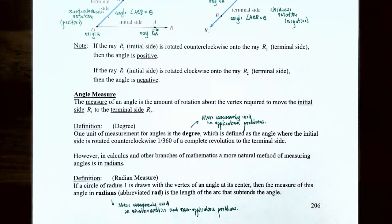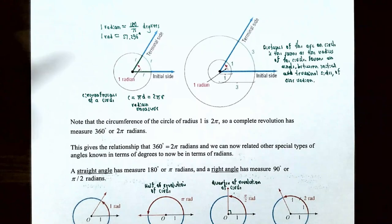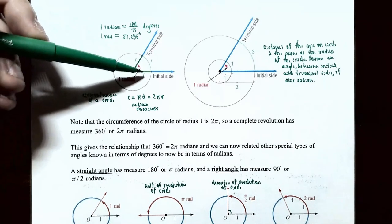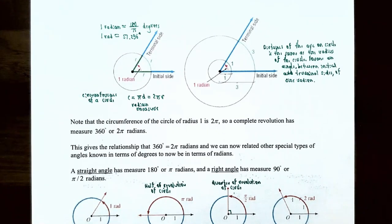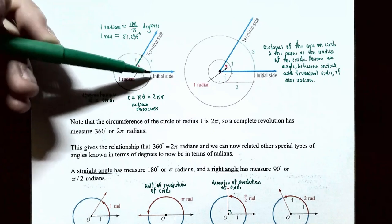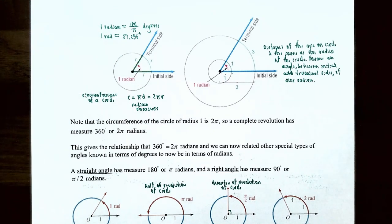The more commonly used measurement for angles is what's called radians, which is more commonly used in calculus and other branches of mathematics. If a circle of radius 1 is drawn with a vertex of an angle at its center, then the measure of this angle in radians is the length of the arc that subtends the angle. If the initial side is rotated one radian, the distance traveled along the circle equals the radius R — that is what's called one radian of measurement.